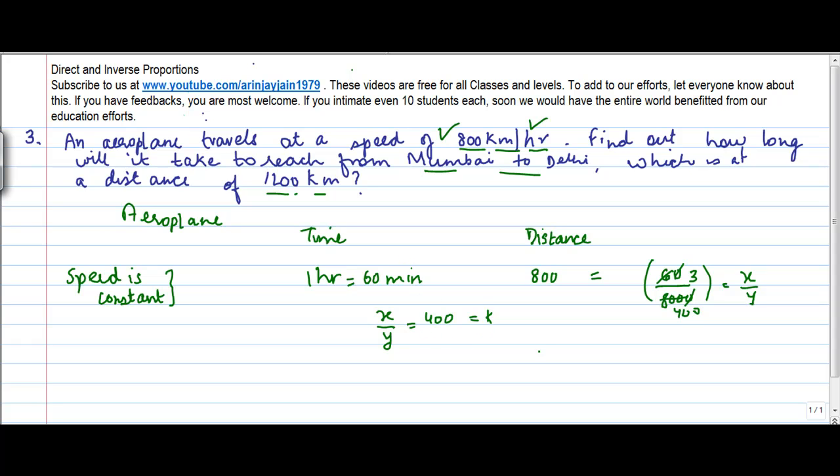Now we know that in second case the variable is 1200 kilometers and we need to find out what is the time taken. So basically 3 upon 400 is equal to x1, let us call this as x1 upon 1200.